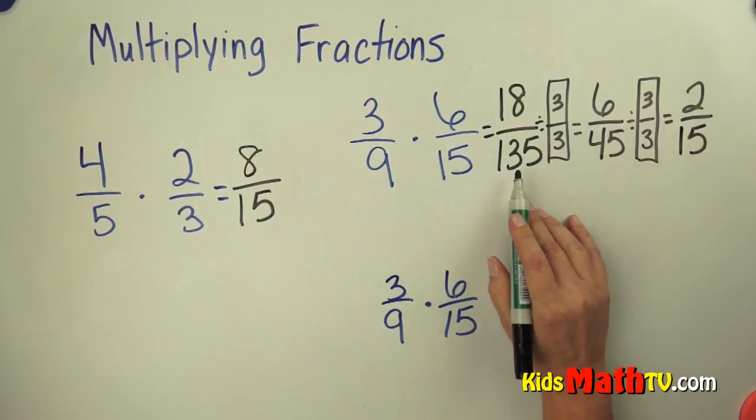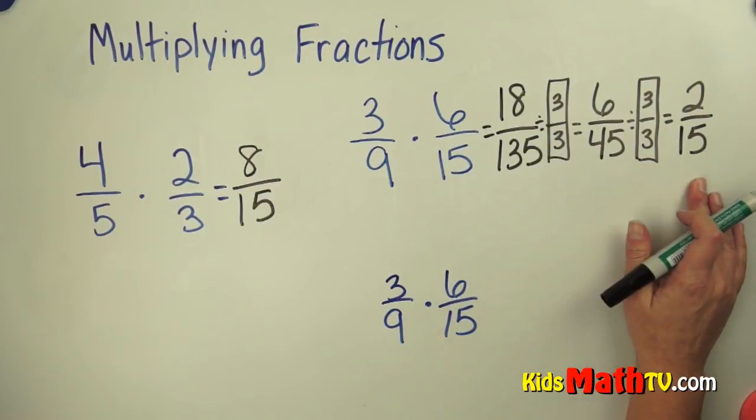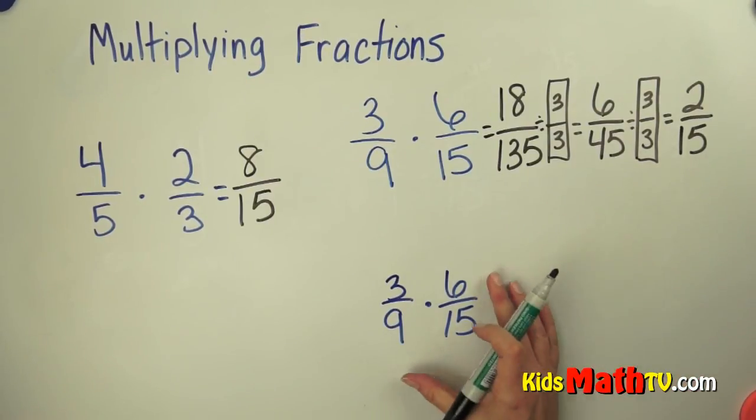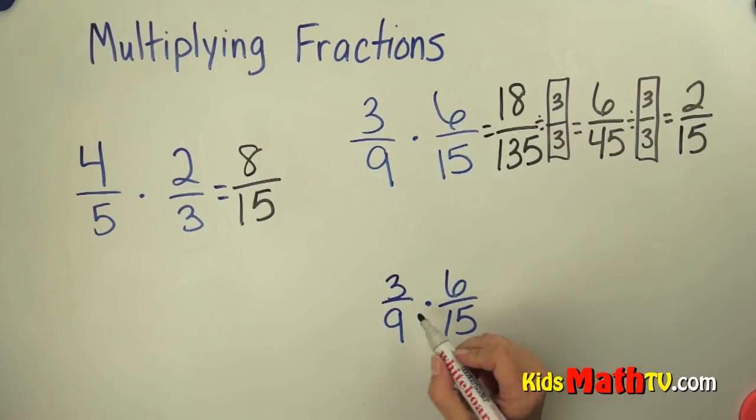Now when we do it this way we get these kind of large numbers, and this is fine. This is the right answer. There is another way we can do it. We can take that same problem, 3 ninths times 6 fifteenths, and do what we call cross-cancelling.